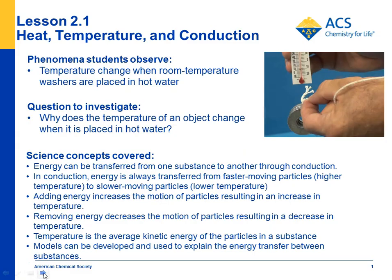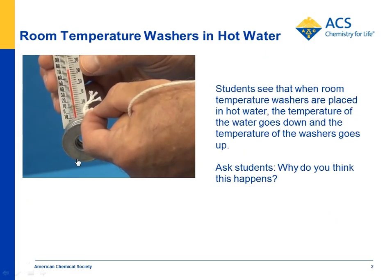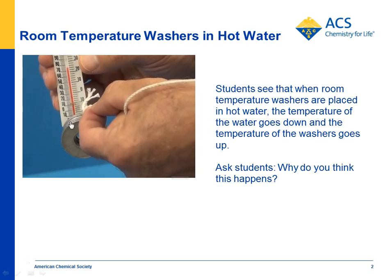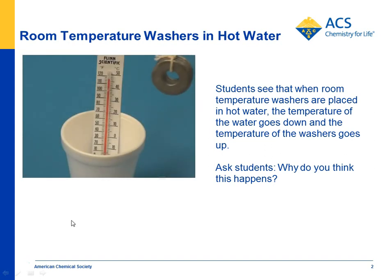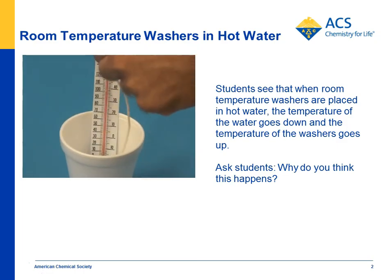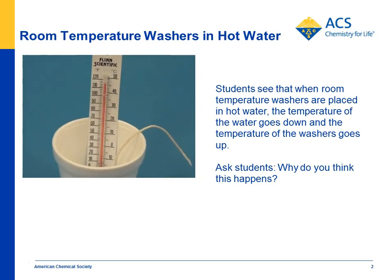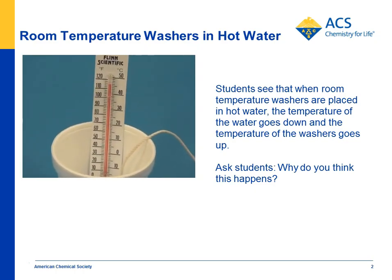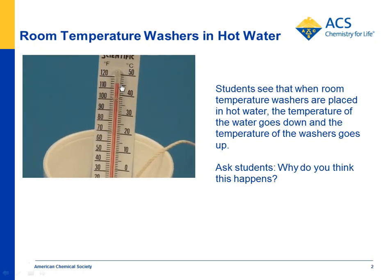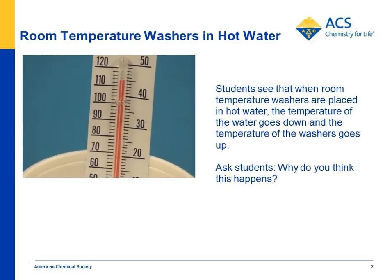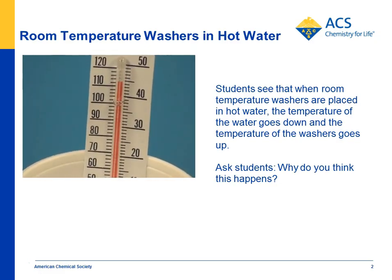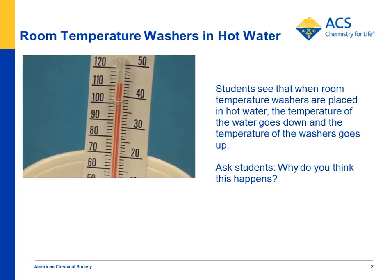So let's take a look at how this works. We use large metal washers, take their temperature — they're about room temperature — and then place those in hot water. We don't use much water because we want the temperature of the water to change. Students see almost immediately that the temperature of the water begins to go down, and when the washers come out, they see that the temperature of the washers goes up.